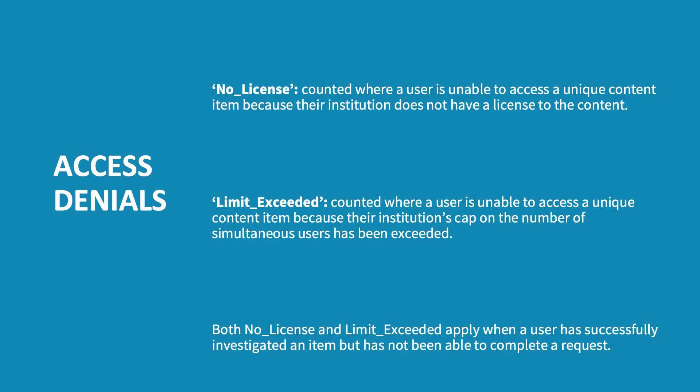Access denials are sometimes known as turnaways. Two varieties of access denial metric are tracked in Release 5. No license is counted where a user is unable to access a unique content item because their institution does not have a license to the content. Limit exceeded is counted where a user is unable to access the item because their institutional cap on the number of simultaneous users has been exceeded. Both no license and limit exceeded apply when a user has successfully investigated an item but has not been able to complete a request.